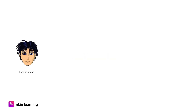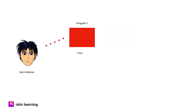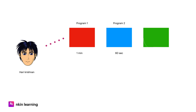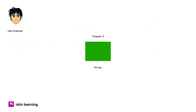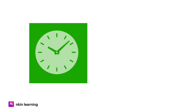Let's take a look at the first example. Harikishina has 3 programs to solve a problem. The first program takes 1 minute. The second program will complete execution faster. The third program will solve the problem in 30 seconds. This is not easy for us to compare just by time.